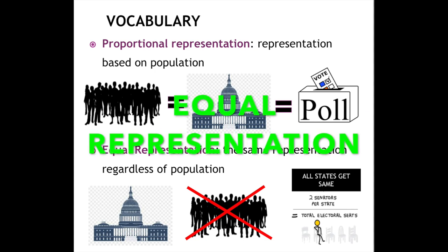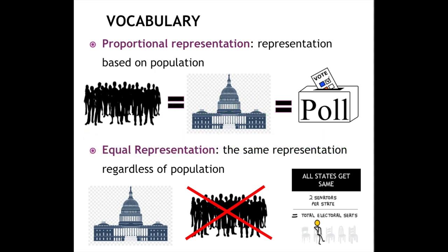Equal representation would be the opposite. Equal basically says that it should not be based on population. Instead, every state should have the same amount of representatives. Whether you're big or small, you should have the same amount — each state should have two representatives that go to Congress to make rules or laws or make the voting process.